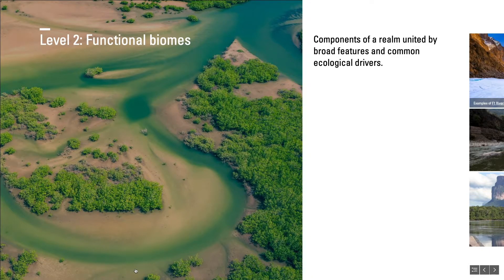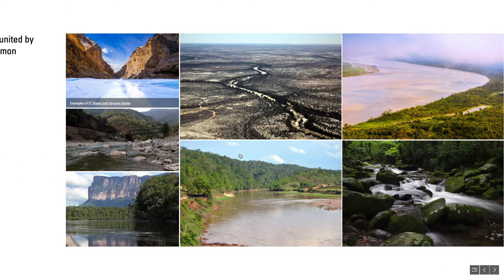Functional biomes are the second level of the hierarchy. They are components united by broad features of ecosystem structure and one or few common major ecological drivers that regulate major ecological functions. They are derived from the top-down by subdivision of realms. For example, the rivers and streams biome includes running water ecosystems flowing from uplands or underground springs towards deltas, estuaries, or lakes, and they can have permanent, seasonal, or episodic flows and differ in total flow or volume.